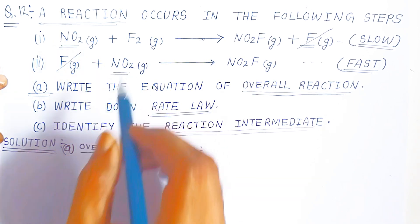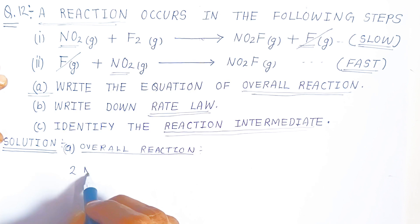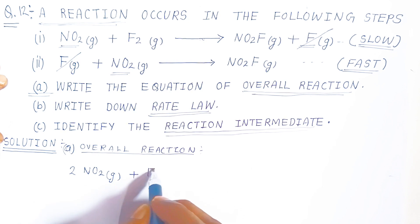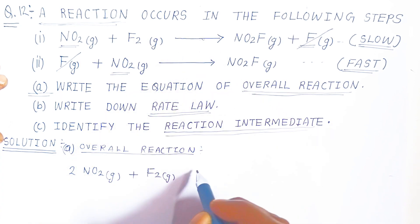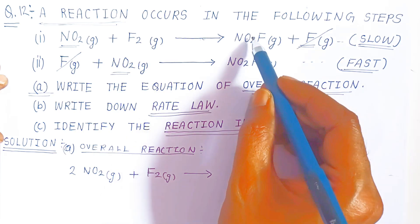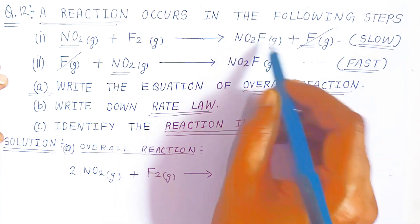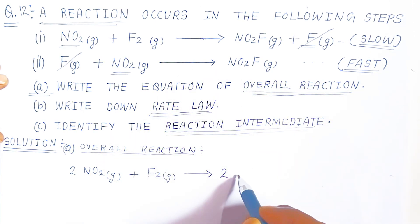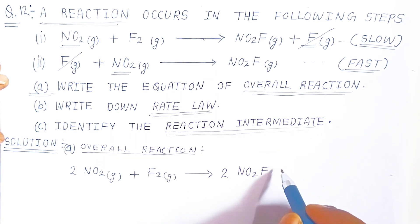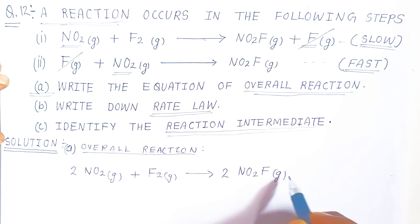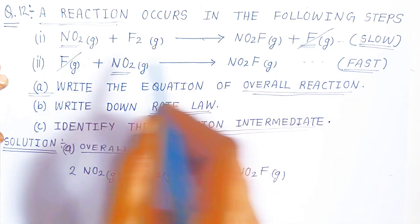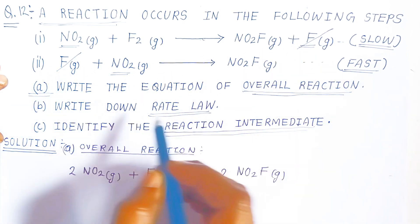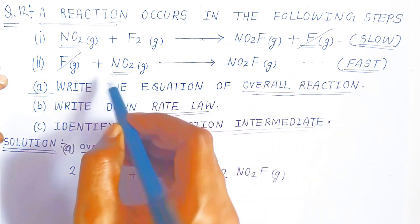After cancelling, on the reactant side you have 2 NO₂ gas plus F₂ gas (since two F₂ molecules appear total), and on the product side you get 2 NO₂F (nitryl fluoride gas). This is the overall reaction — you cancel the similar terms from the two steps by adding step one and step two together.